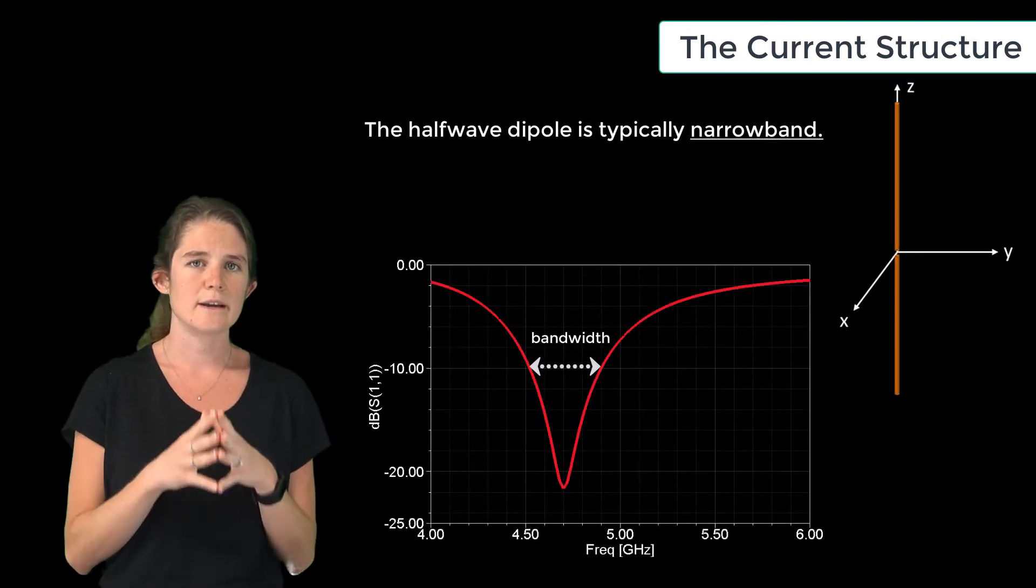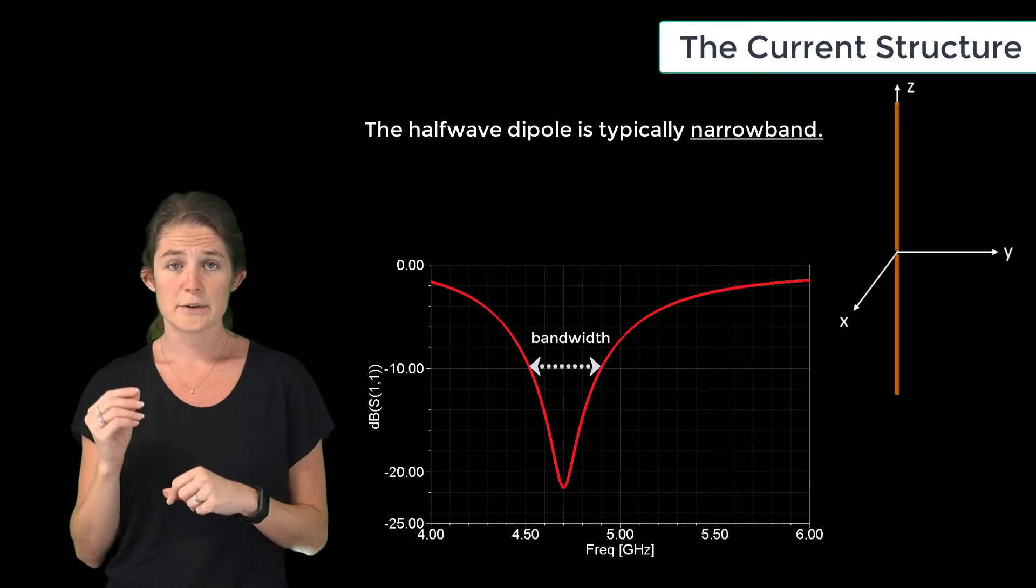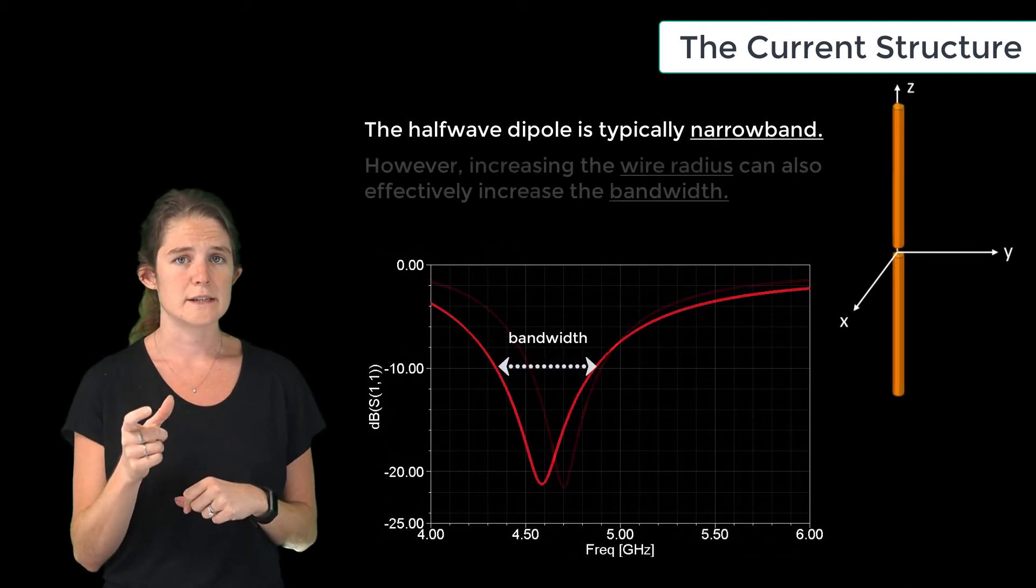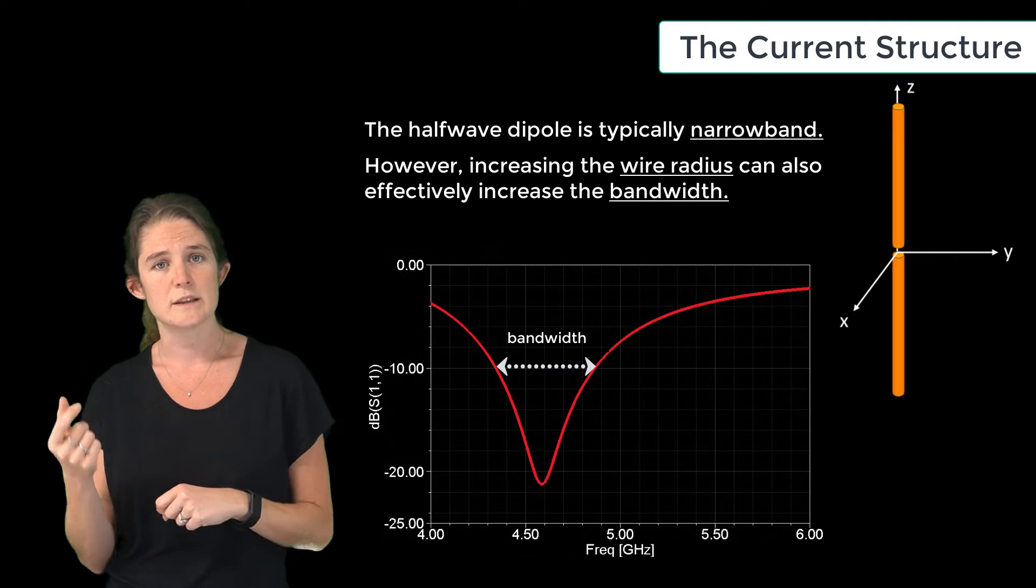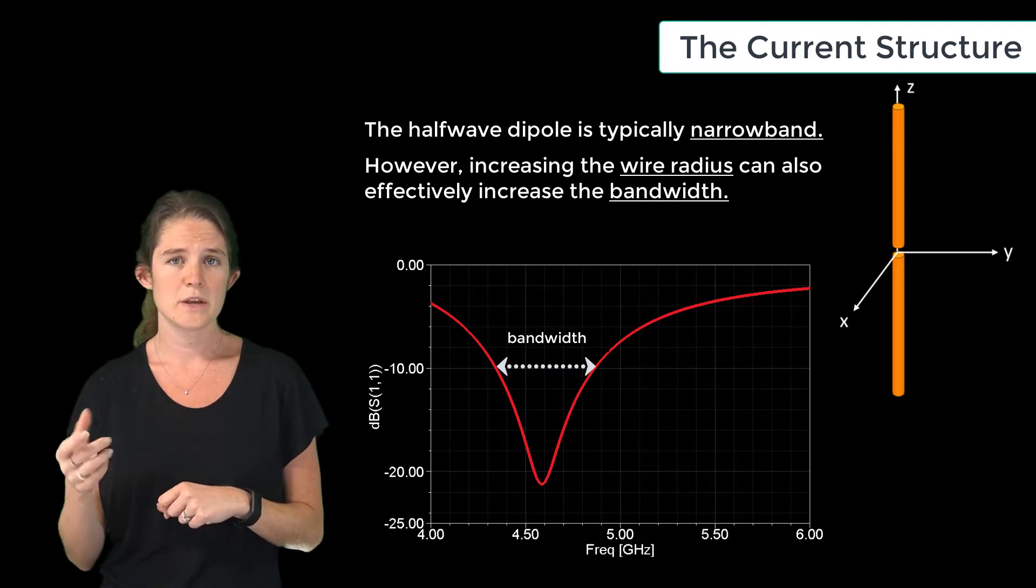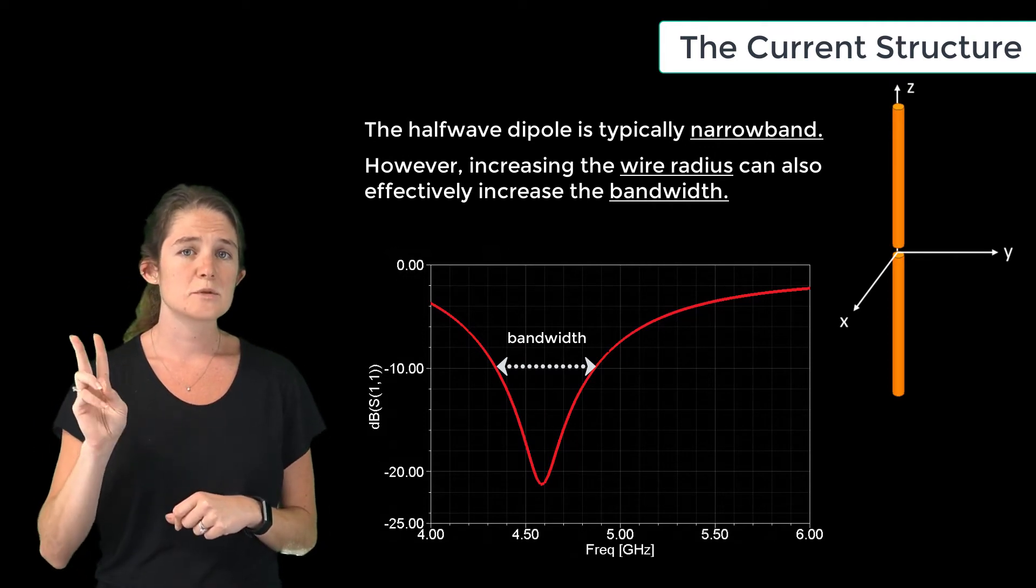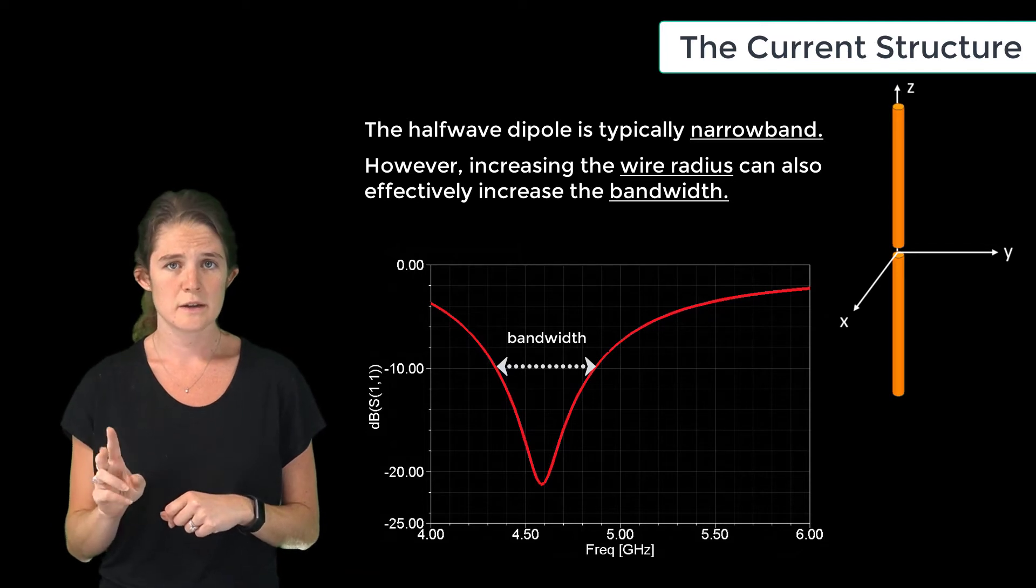The antenna is typically considered a narrowband antenna. However, increasing the radius of the antenna is an effective means of increasing the bandwidth of operation. You must keep in mind though that this comes with two significant trade-offs.